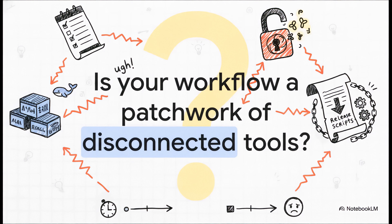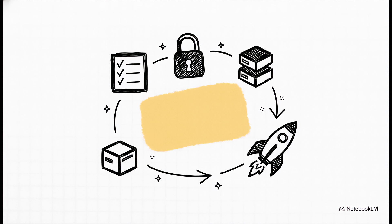You know the drill — you're jumping between your task manager, then over to a separate app for your secrets, then you're wrangling with Docker, and finally you're battling some clunky release scripts. All that context switching isn't just a little annoying, it's a huge productivity killer. So what if your tools just worked together, beautifully, right inside your terminal? That's what we're diving into today: a set of four really powerful tools that follow your project's entire lifecycle.